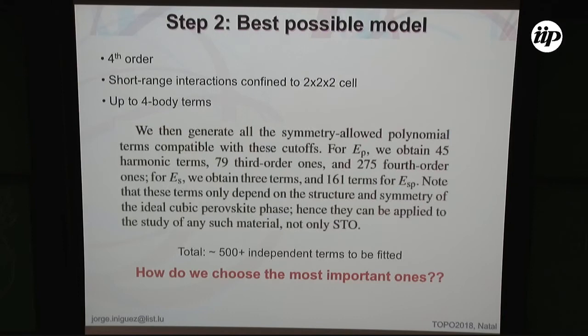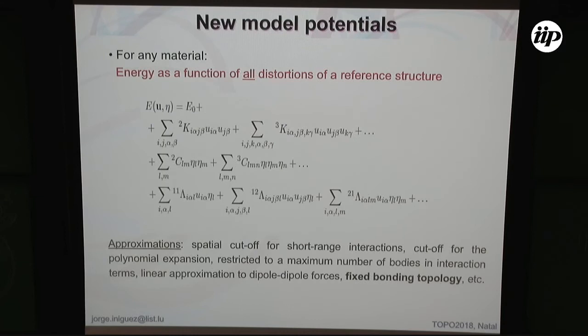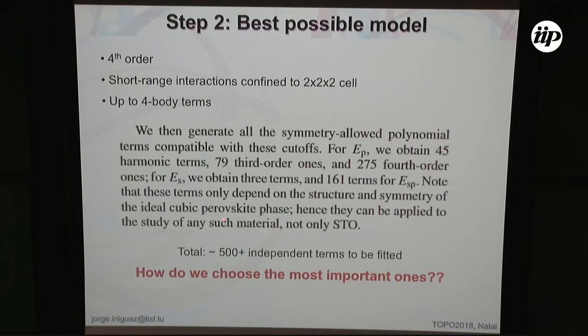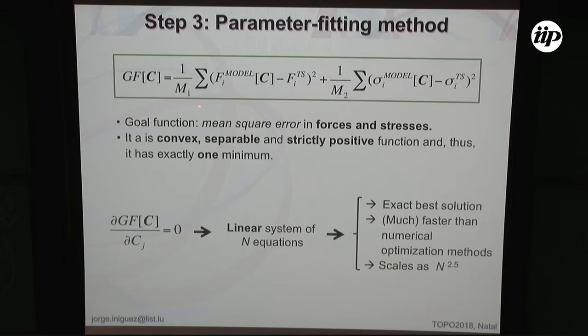In the second step, I define how complex my model can be. I decide: all interactions up to fourth order, all interactions up to a certain spatial range, and so on. I then count how many interactions satisfy these criteria. For the typical case of strontium titanate, I end up with 500 independent parameters that in principle could be fitted — that's quite a lot. The question then is: how do I choose the important ones?